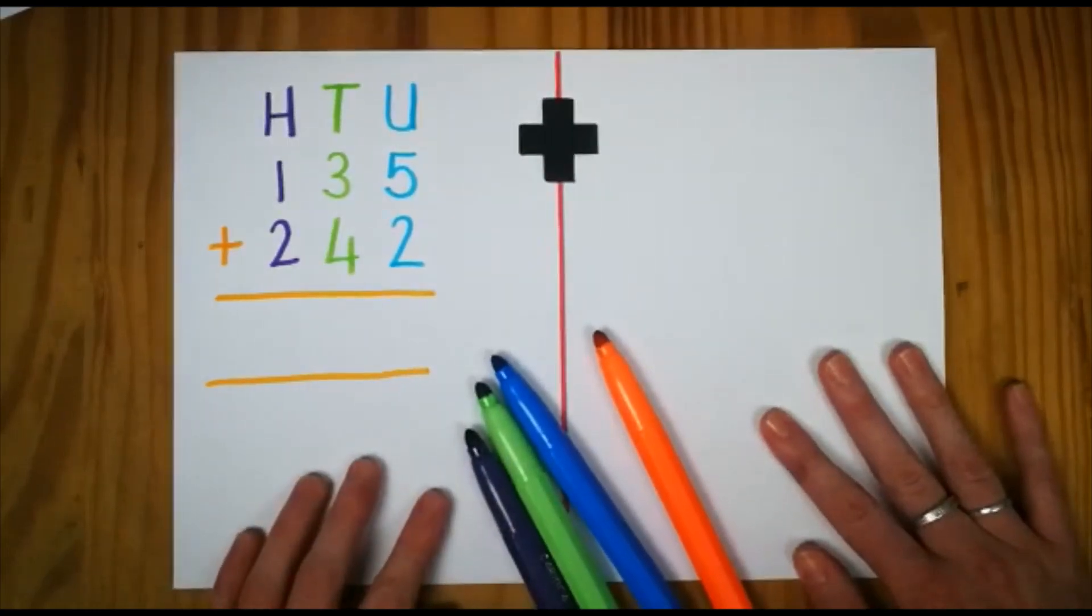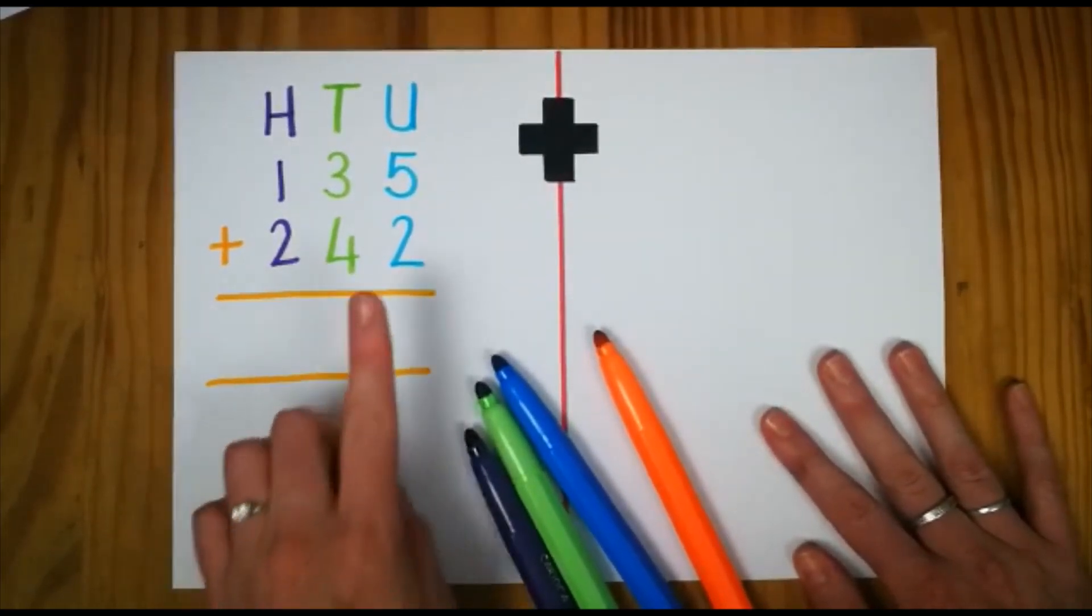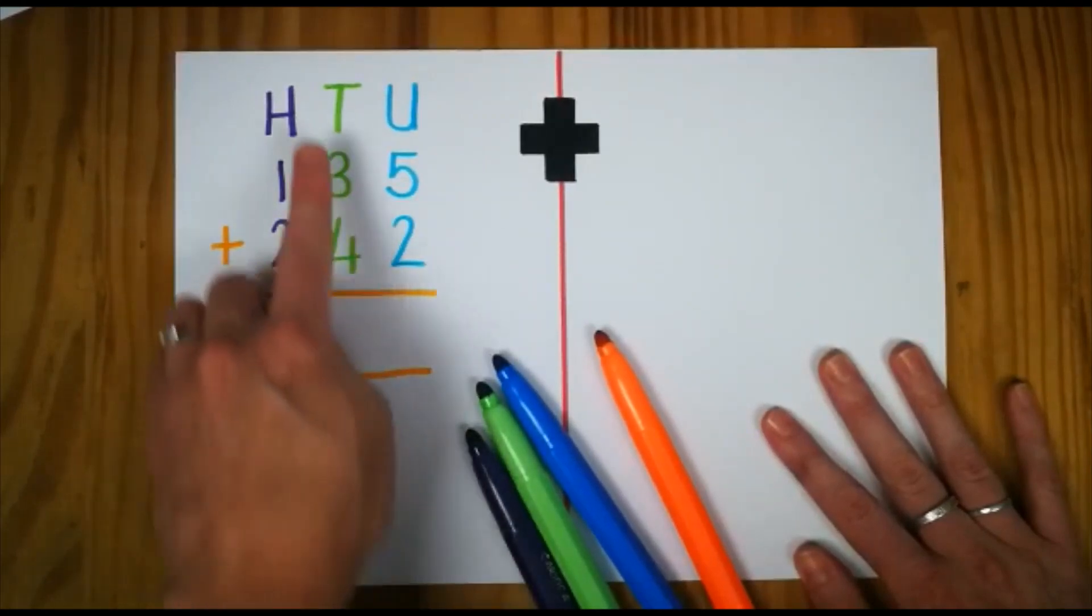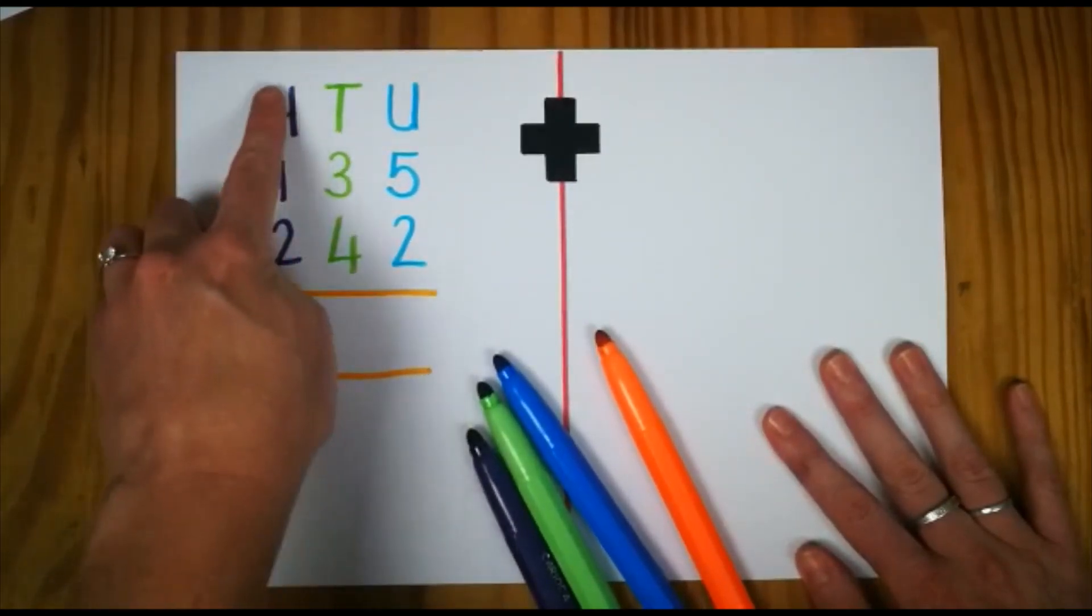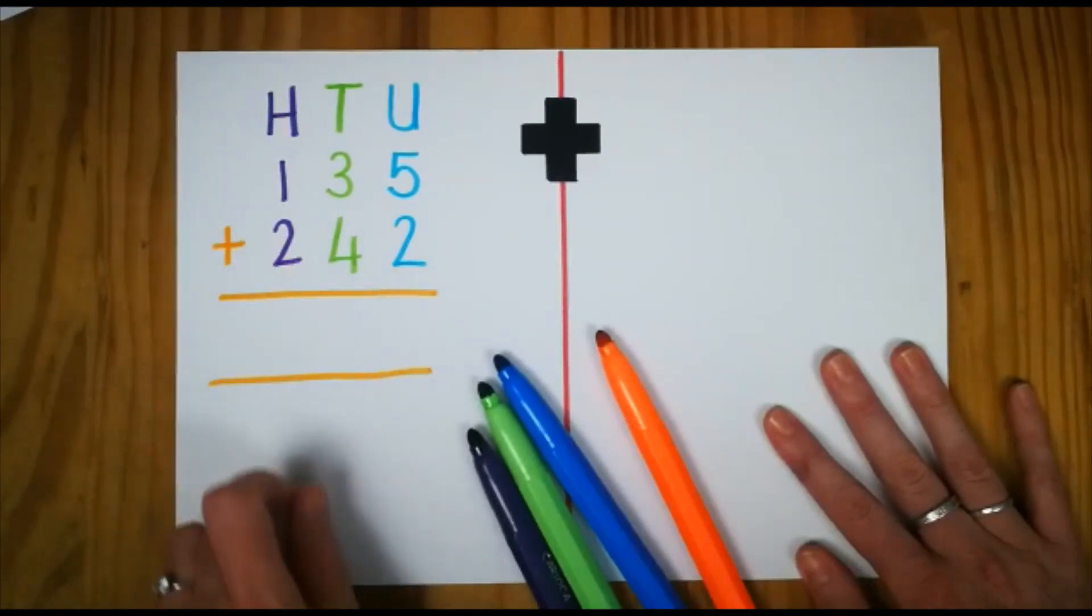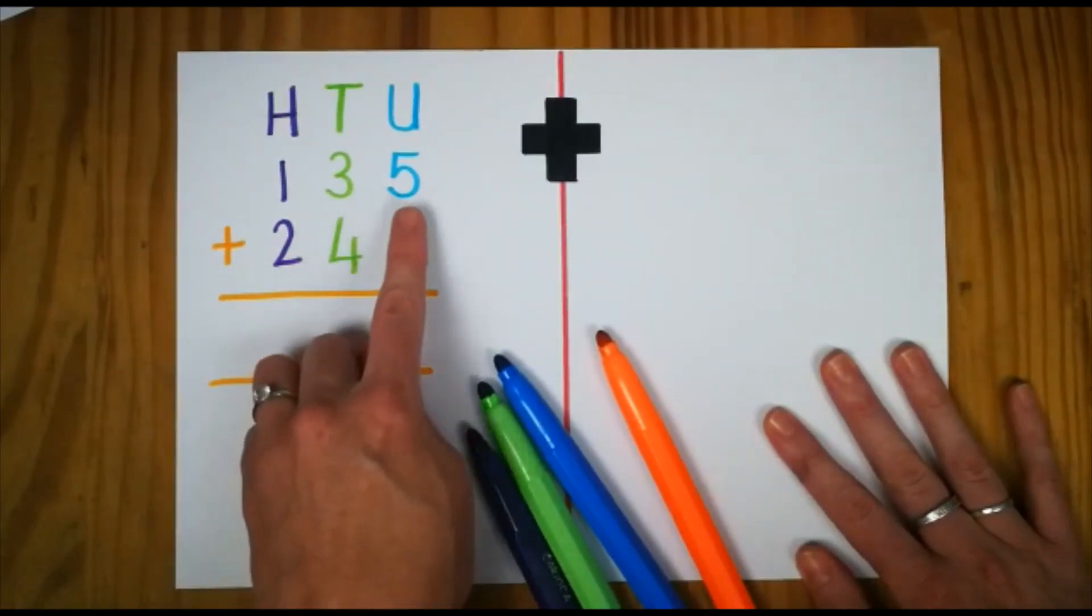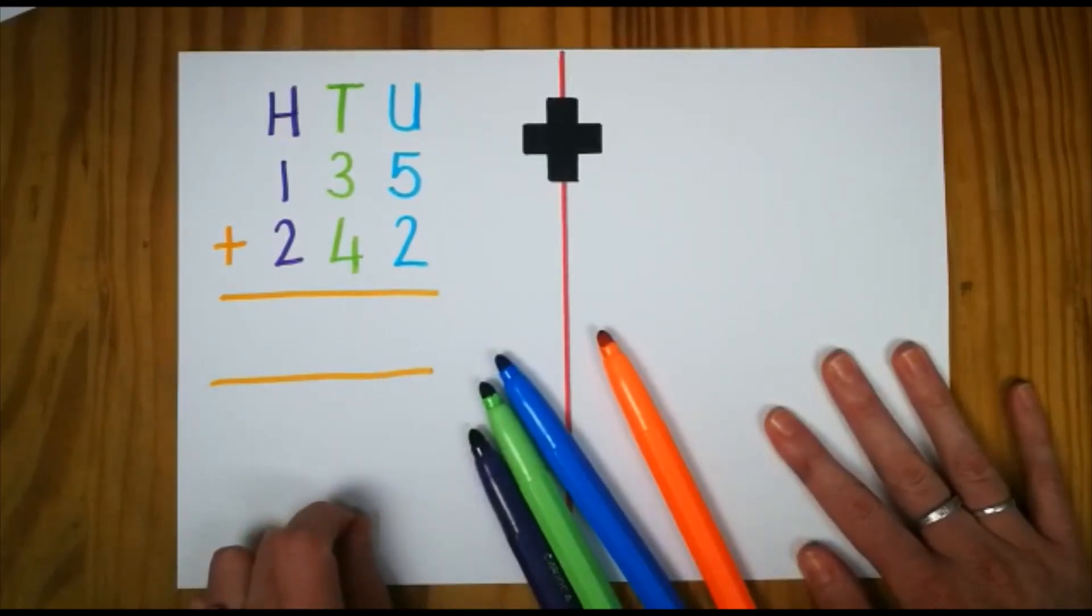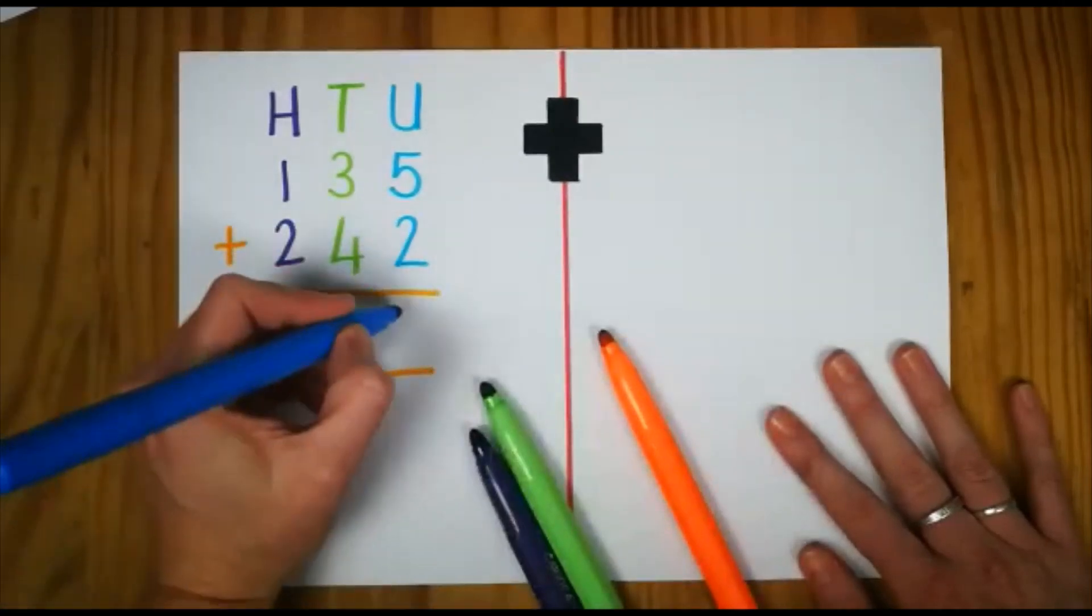Now when you do sums like this, you always start at the back. We're first going to add the units, then we're going to add the tens, and finally we're going to add the hundreds. So let's think. 5 plus 2. What is 5 plus 2? 7.